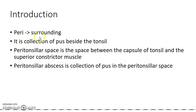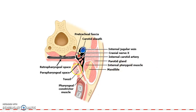The term peri means surrounding. Peritonsillar abscess is collection of pus beside the tonsil. The peritonsillar space is the space between the capsule of the tonsil and the superior constrictor muscle. Peritonsillar abscess is defined as collection of pus in the peritonsillar space.